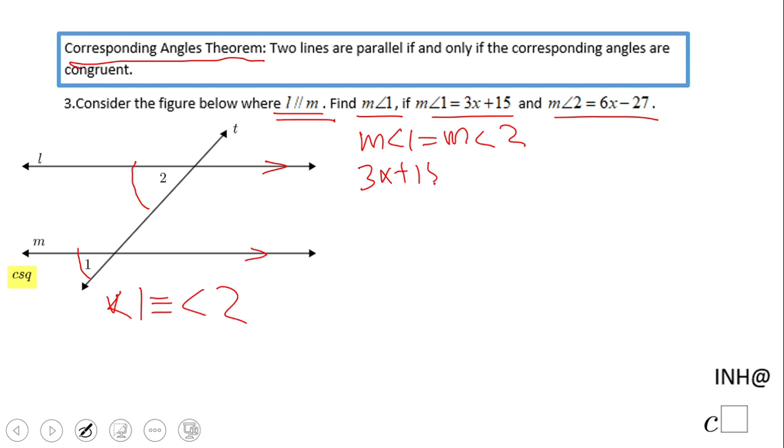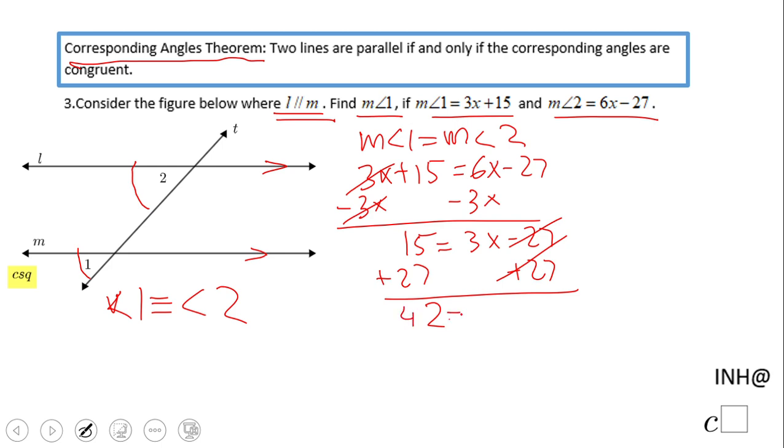Now we'll subtract the x, then divide by 3. x equals 14. And we need one more thing: we need to find the measure of angle 1.